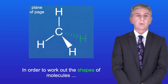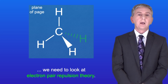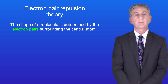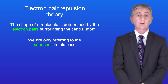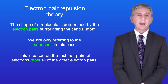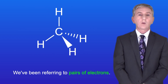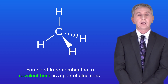In order to work out the shapes of molecules we need to look at electron pair repulsion theory. This states that the shape of a molecule is determined by the electron pairs surrounding the central atom — referring only to the outer shell. This is based on the fact that pairs of electrons repel all other electron pairs, so the electron pairs move as far apart as possible to minimize repulsion. A covalent bond is itself a pair of electrons.